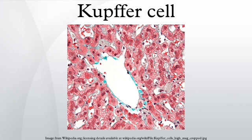Development. Their development begins in the bone marrow with the genesis of promonocytes and monoblasts into monocytes, and then on to peripheral blood monocytes, completing their differentiation into Kupffer cells.